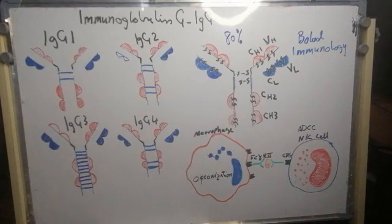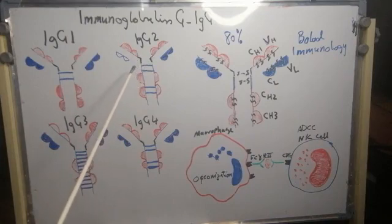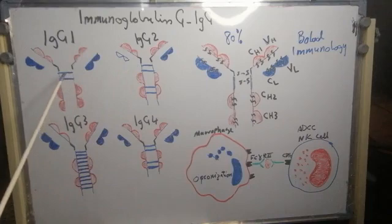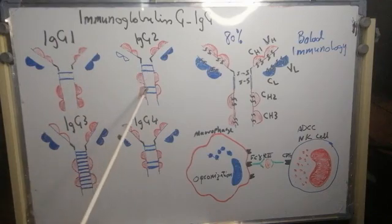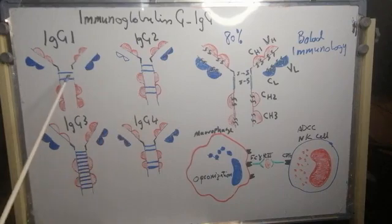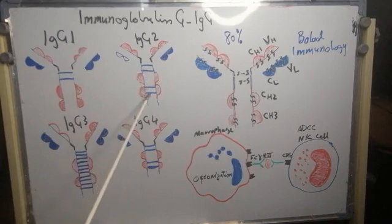These four subclasses differ in the size of the hinge region and the number and position of disulfide bonds. As can be seen here, these are the disulfide bonds connecting the two heavy chains together.